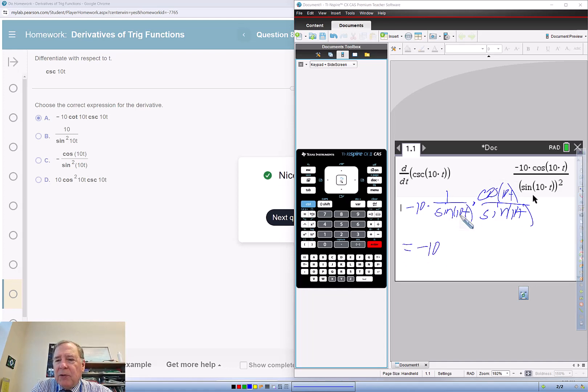So we get negative 10. And 1 over sine is cosecant. So it's negative 10 cosecant 10t times cotangent 10t. So these things are the same.